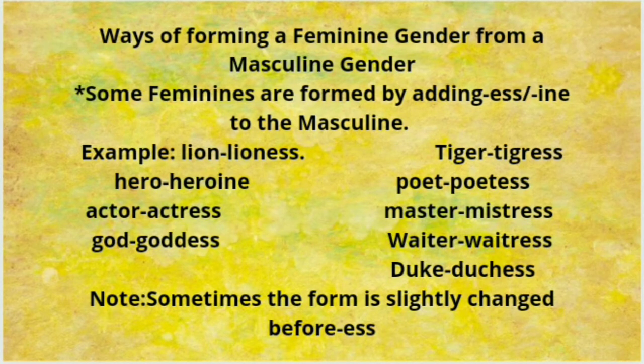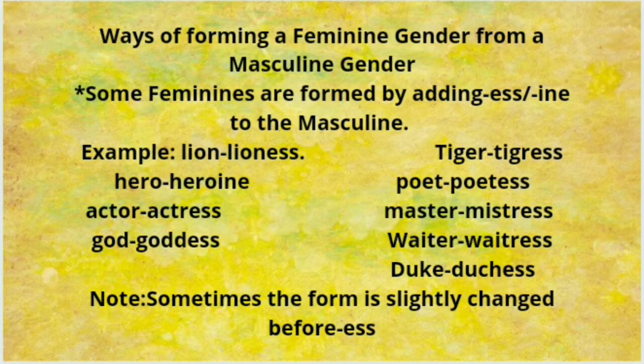We will now see the next way of forming feminine gender from masculine gender. Some feminines are formed by adding -ess or -ine to the masculine. For example, lion becomes lioness, hero becomes heroine, actor becomes actress, god becomes goddess, tiger becomes tigress, poet becomes poetess, master becomes mistress, waiter becomes waitress, duke becomes duchess.